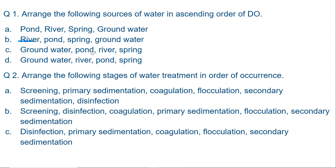A stagnant water body has more DO than groundwater. Then comes river water, which is always in motion. And finally, spring water, which is constantly in a lot of motion and a lot of aeration happens in springs. Note: when I talk about a pond, I mean an oligotrophic pond and not a eutrophic pond. So the order is: groundwater, pond, river, and spring — these are ideal conditions.